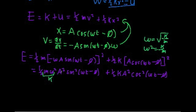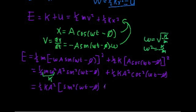So we have one-half k a squared here and one-half k a squared here. Let's factor that out: one-half k a squared times sine squared omega t minus phi plus cosine squared omega t minus phi.